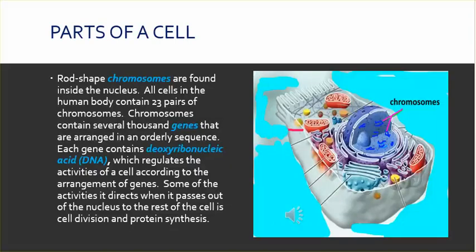Rod-shaped chromosomes are found inside the nucleus. All cells in the human body contain 23 pairs of chromosomes. Chromosomes contain several thousand genes arranged in an orderly sequence. Each gene contains deoxyribonucleic acid, or DNA for short, which regulates the activities of a cell. DNA directs cell division and protein synthesis as it passes out of the nucleus to the rest of the cell.